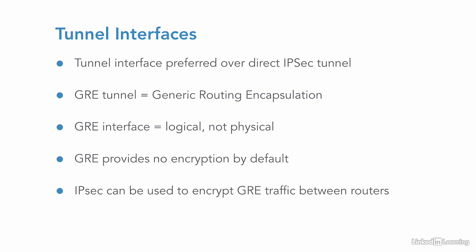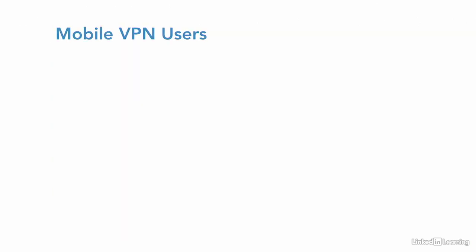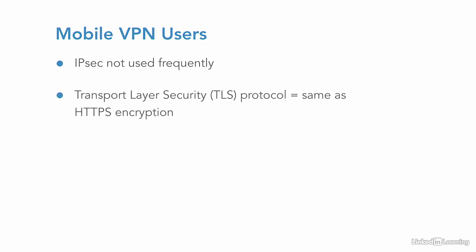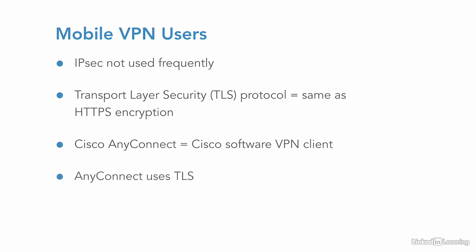Securing traffic between sites is just one piece of the puzzle. What can be done for road warriors? While IPsec has been used in the past, it's far more common to use something like the Transport Layer Security, or TLS protocol, for these remote user sessions. TLS is most often seen used to secure HTTPS communications. The Cisco AnyConnect client, which is software loaded on an end user's device, creates a secure connection to a remote location using TLS.